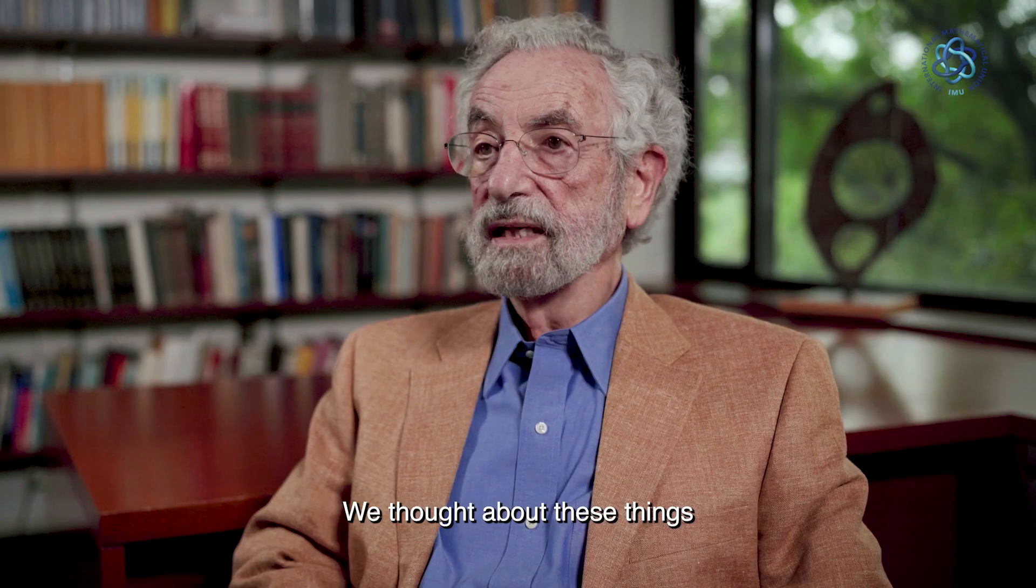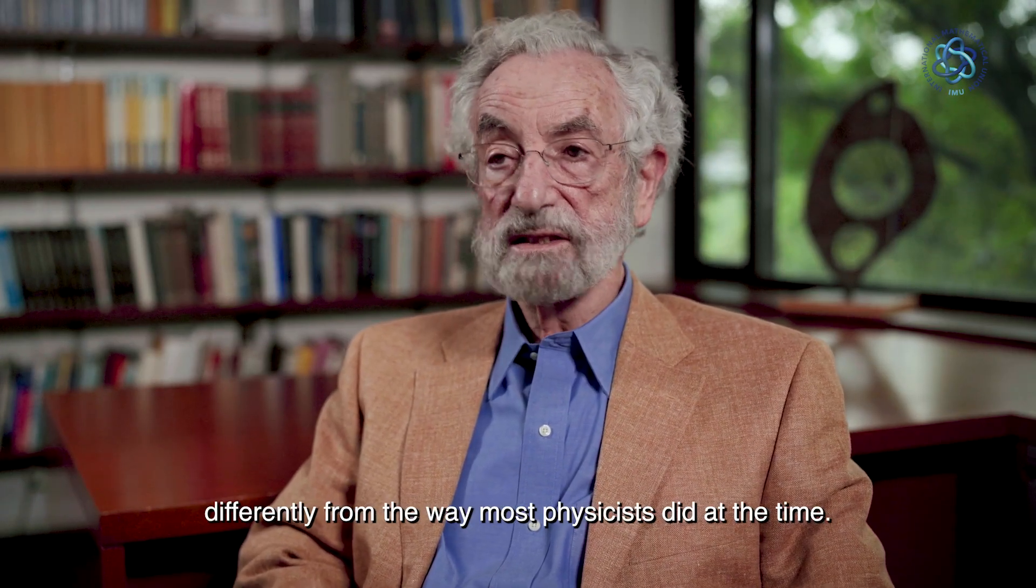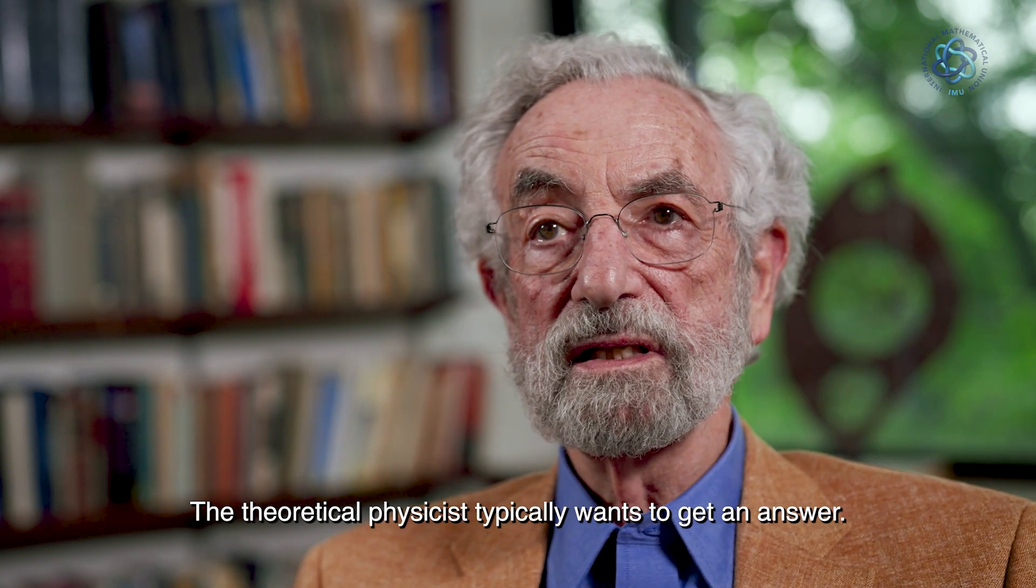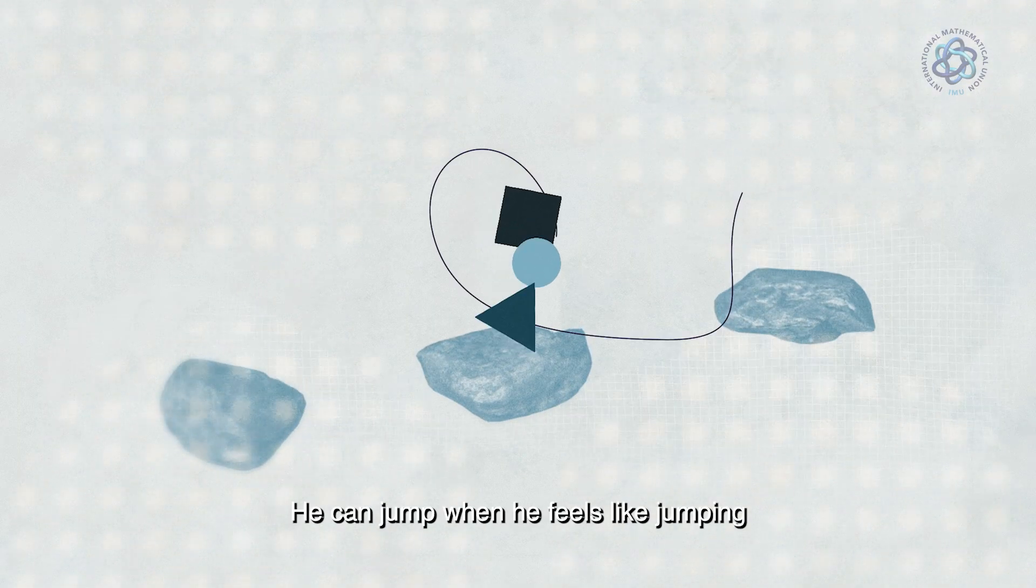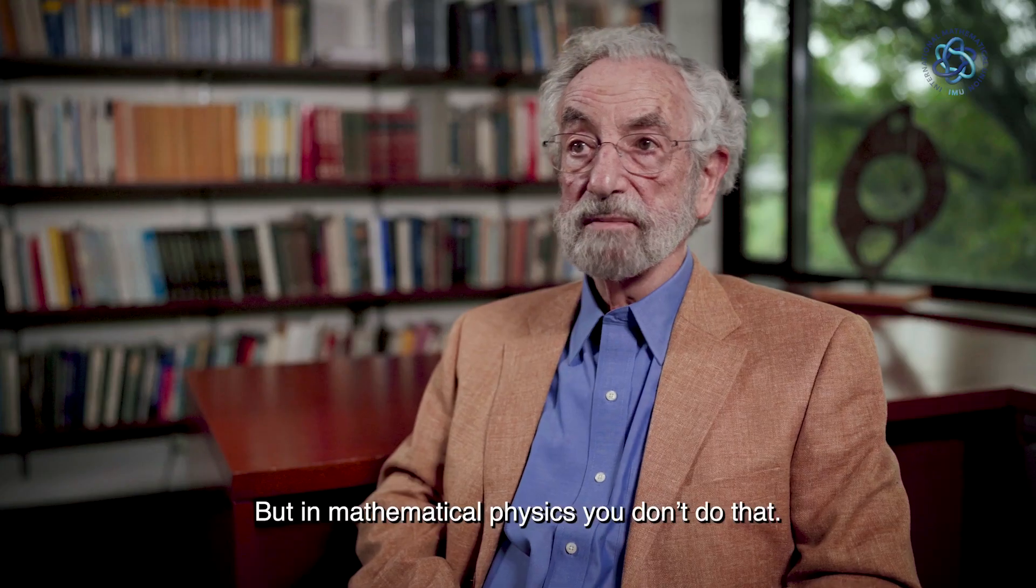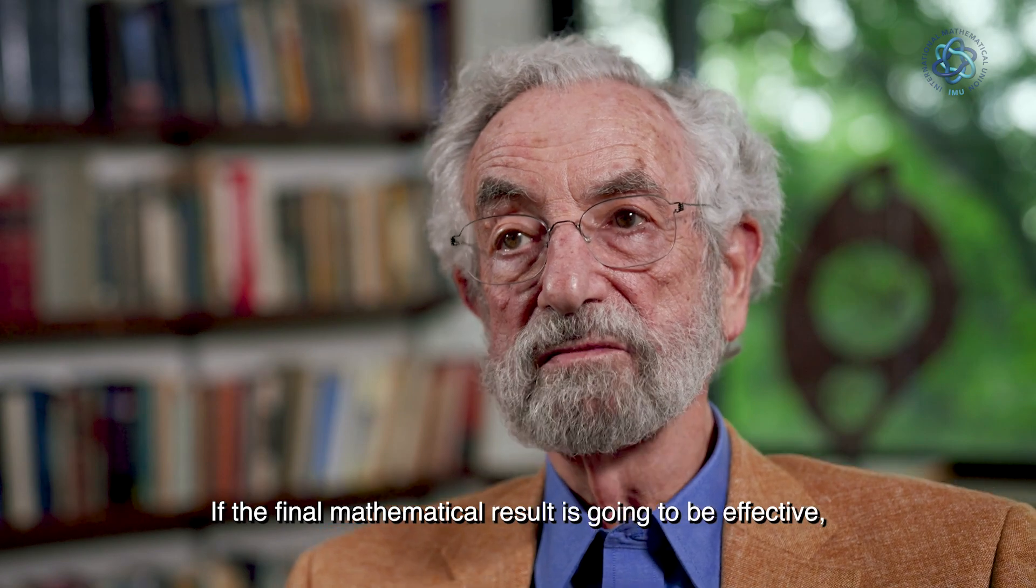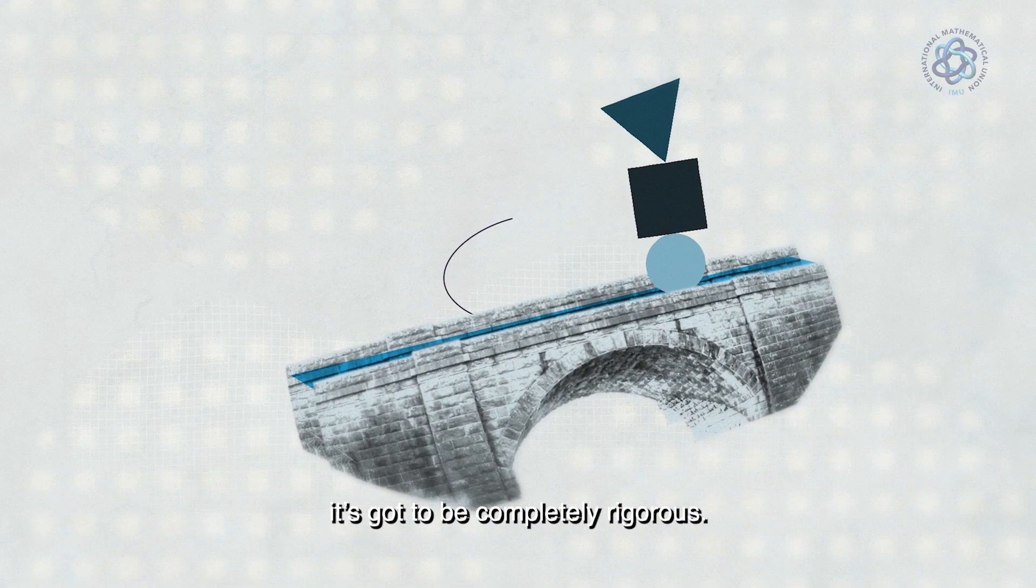We thought about these things differently from the way most physicists did at the time. The theoretical physicist typically wants to get an answer. It's like going over stepping stones. He can jump when he feels like jumping as long as he gets to the other side, but in mathematical physics, you don't do that. If the final mathematical result is going to be effective, it's got to be completely rigorous.